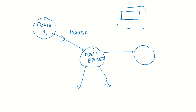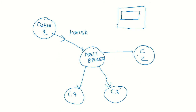In the MQTT broker, we have clients: Client 2, Client 3, and Client 4. These clients can subscribe to the MQTT broker. In MQTT, the equivalent of a channel is called a topic. So Client 2 subscribes to a particular topic, and Client 3 subscribes to a particular topic.